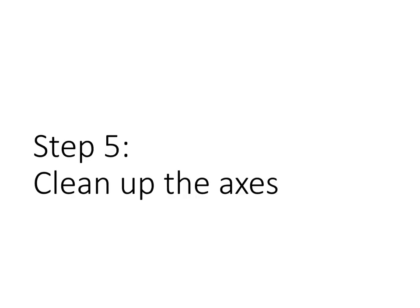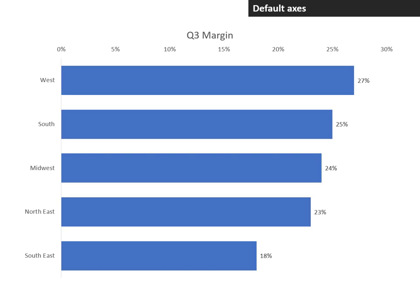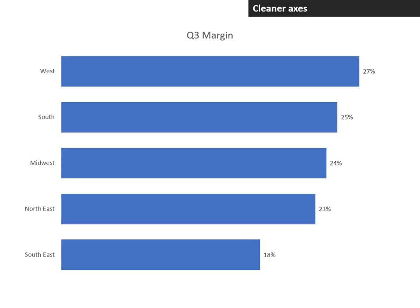Step five: clean up the axes. The horizontal axis has a number of segments, each with a number, telling you it starts at zero and ends at 30%. Now that we have our data labels, in most cases it's not necessary. If you do need to indicate to your audience that you are starting at zero and not some other value, use a minimalist axis with only the zero value and the maximum value. On the vertical axis, there's a line on the left side of all the bars. Everybody can see they line up on the left side, so we don't need that line. When we remove those, we have a much cleaner graph that's easier for people to understand and focus on.